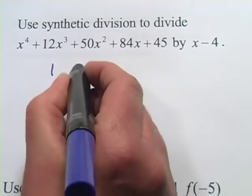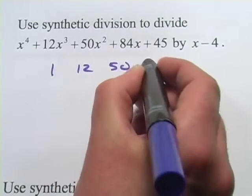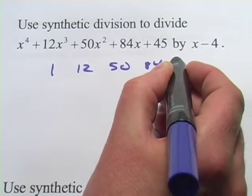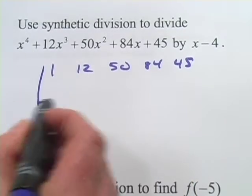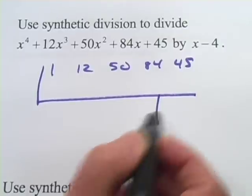So we'll just write a 1 for the x to the fourth term, at 12, 50, 84, and 45. And then we'll draw our little setup here, and there's the spot for the remainder.